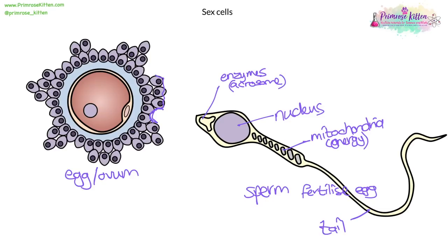The egg itself has a very large cytoplasm, which acts as a food store. As it's released from the ovary, it has to survive for three to four days if it's going to be fertilized, so it needs a very large cytoplasm to provide energy. It's surrounded in a couple of layers of cells and is able to survive on its own for a few days.